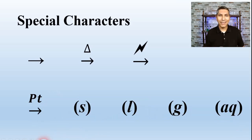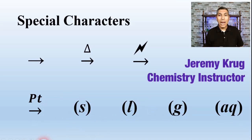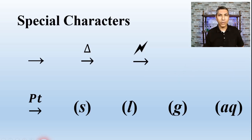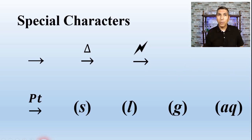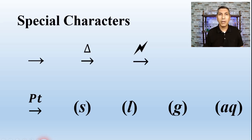Hi there, and welcome back to chemistry. My name is Jeremy Krug, and in this video we're learning about five types of chemical reactions. If you were here for the last video, we learned about some of the basics and fundamentals of chemical reactions, including these special characters you see here on the screen that are often used in chemical equations.